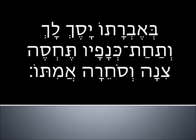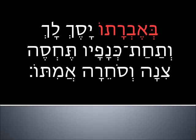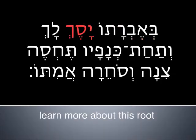Be'evrato yasech lach. Be is the preposition in, here meaning with or by. The tav at the end is his. Ever can mean a limb; in this case it's translated as wing because we're talking about wings. Yasech comes from the root sakak, which means to cover — the same root as sukkah when you build a tabernacle during Sukkot. It's in the imperfect: he will cover. Lach means you.